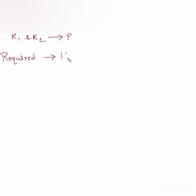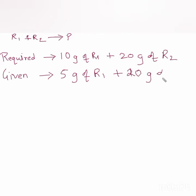Is 10 gram of R1 plus 20 gram of R2. This is what is required for the reaction to complete. But when we are working in the lab, what is given to us is 5 gram of R1 plus 20 gram of R2. Now what will happen in this case? Required is 10 gram of R1 plus 20 gram of R2, but given is 5 gram of R1 plus 20 gram of R2.